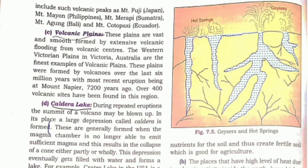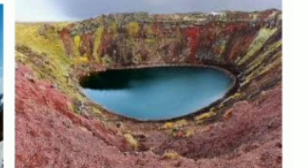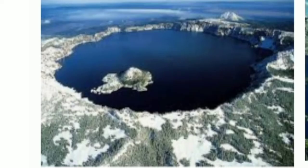Another landform formed by volcanic eruptions is the caldera lake. These are generally formed in the magma chamber when it is no longer able to emit sufficient magma. This results in the collapse of the volcanic cone, partially. The depression eventually gets filled with water and forms a lake. The most famous example is Crater Lake in the USA, which is about 10 kilometers wide and is the deepest lake in the USA.